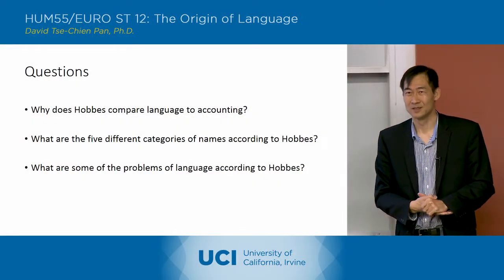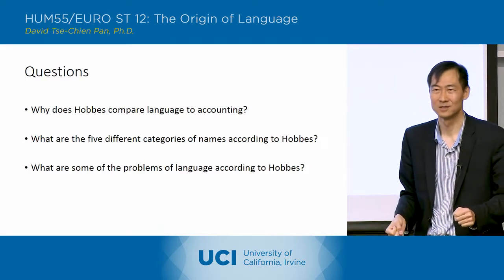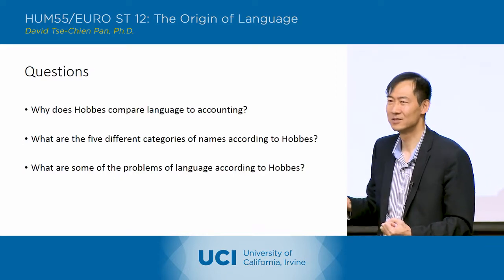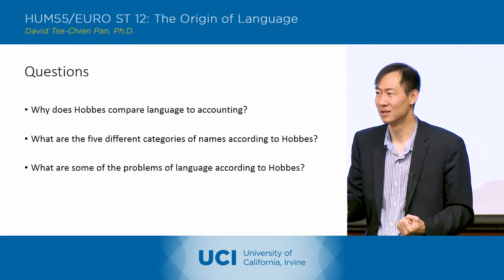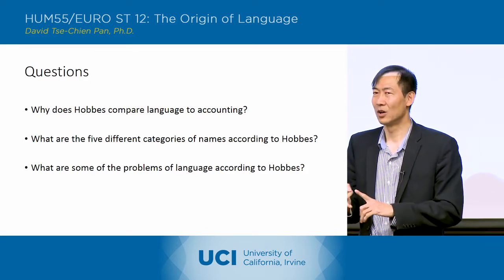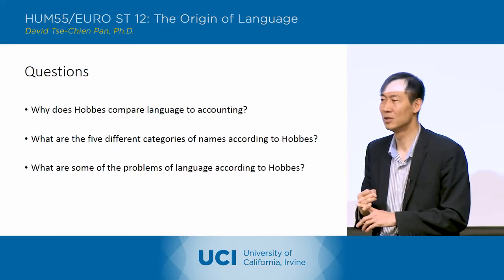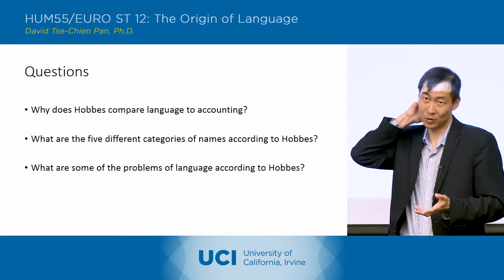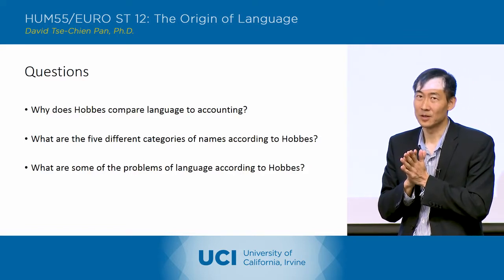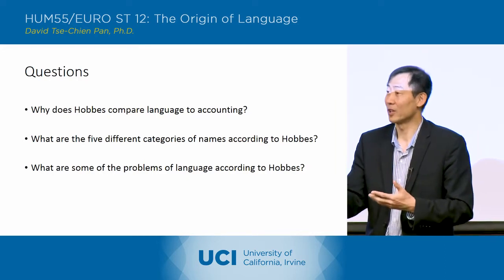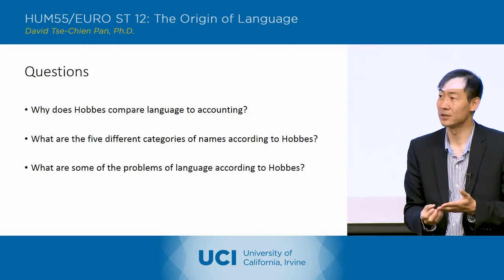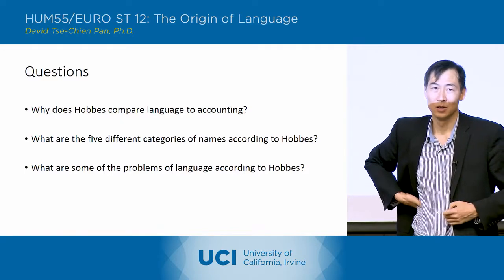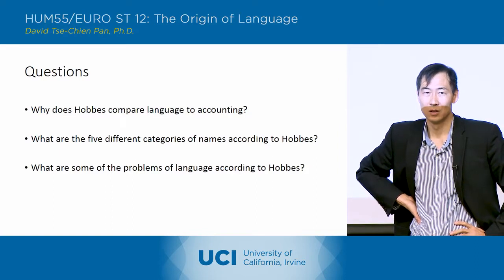Questions to this point? Why does Hobbes compare language to accounting? It's not so much a one-to-one correspondence. He's recognizing the inconstancy of words, where you can interpret each word in many different ways. So there's actually not the one-to-one correspondence so much. It's kind of like the numbers - you have to process them, and then language is like the process of reading them.